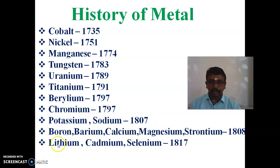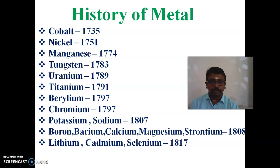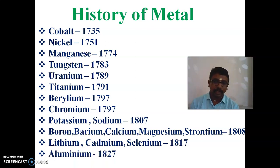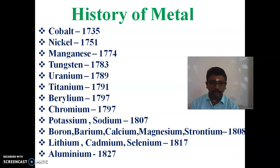Lithium, cadmium, and selenium — these three metals were introduced in the year 1817. The symbol for lithium is Li, cadmium is Cd, and selenium is Se. And aluminium was introduced in the year 1827. The symbol for aluminium is Al.